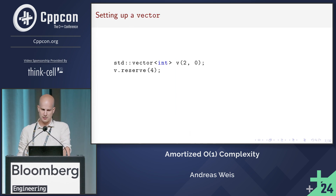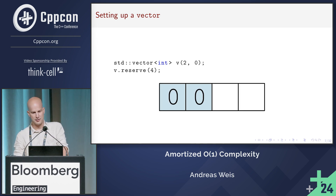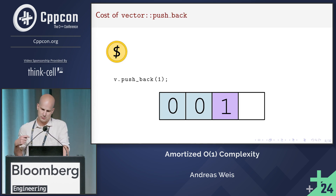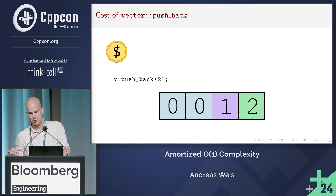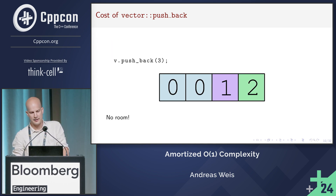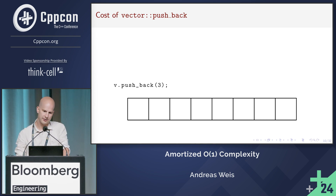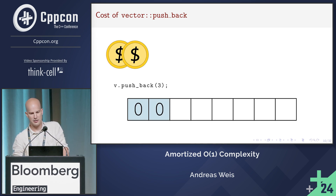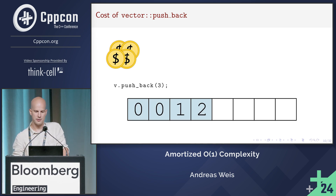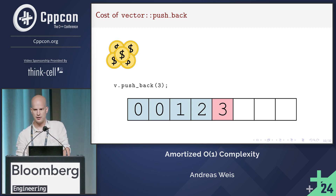Let's set up a vector and push some elements into it. We push one, and we have to pay one coin for the copy. We push the second element — again, we pay one coin for the copy. When we want to push another element, we notice there's no room in our vector anymore, so we have to allocate a new buffer, copy our elements over one by one, each costing one coin, and eventually insert the new element, paying one more coin for that.